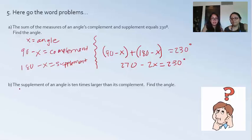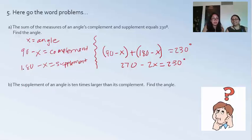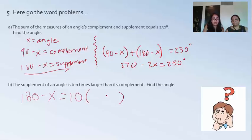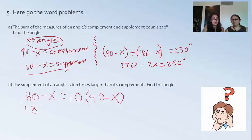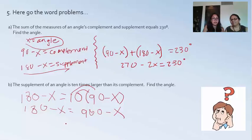For the next word problem: the supplement of an angle is 10 times larger than its complement. The supplement is 180 minus x, and the complement is 90 minus x, so we write: 180 − x = 10(90 − x). Distribute, then combine like terms to solve for x. We got x equals 80 for this problem. For the first problem, x equals 20. Check your work to confirm.